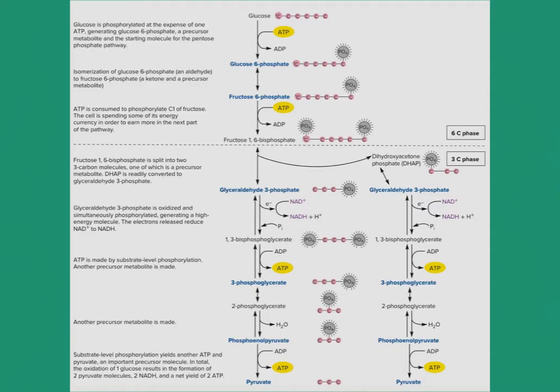The phosphate on the first carbon of 1,3-bisphosphate glycerate is donated to ATP to produce ATP. This right here is an example of substrate-level phosphorylation.